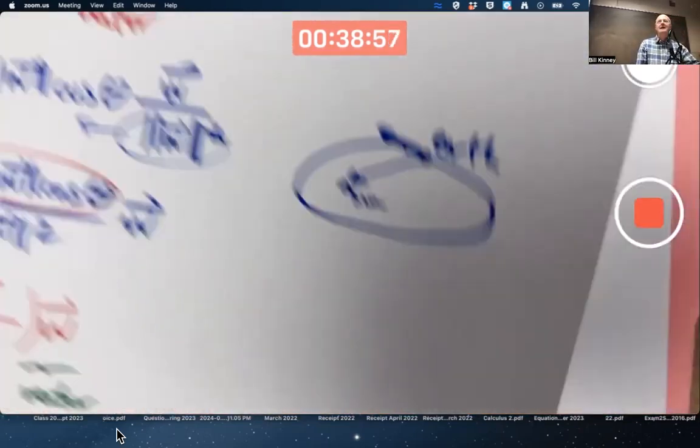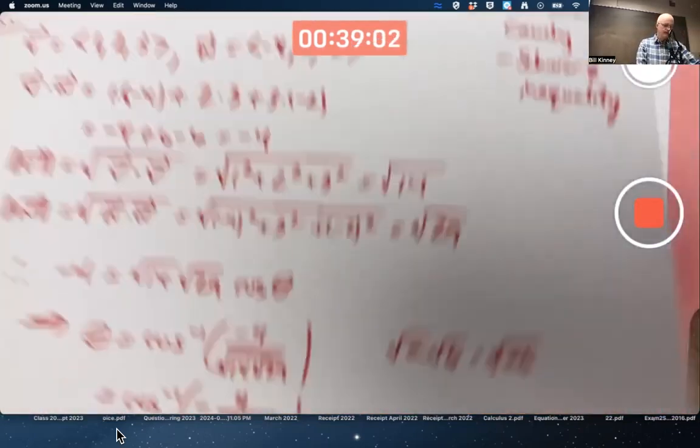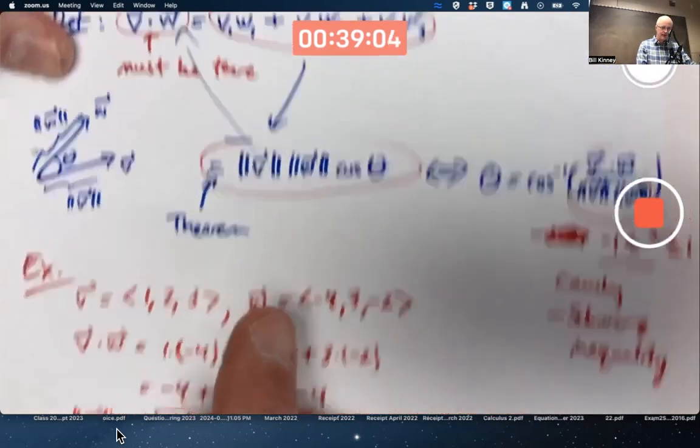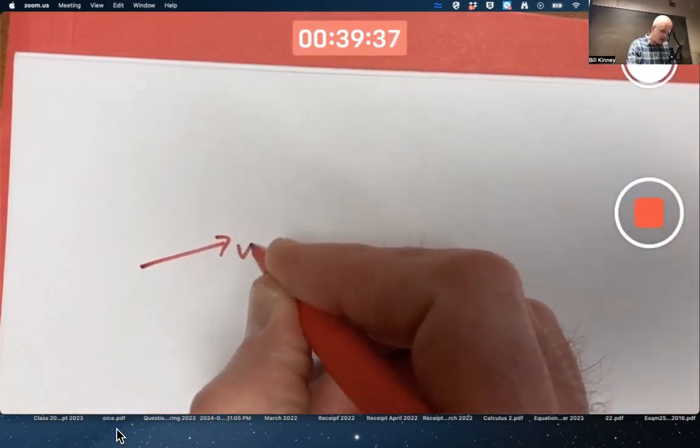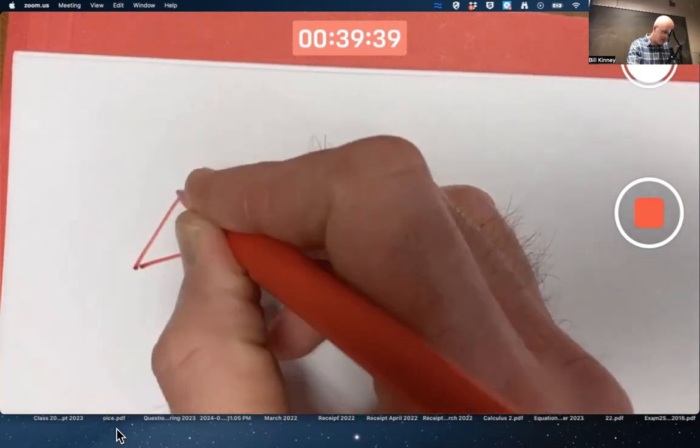Let's end by verifying the equality of these things. All right, so redraw a picture. Here's V, here's W.